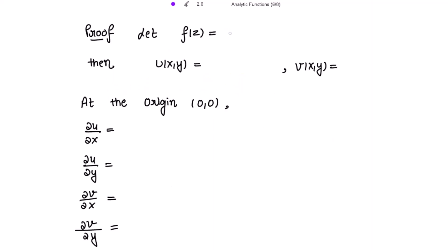Let f(z) = u + iv. Because f(z) = √|xy| as given, then u(x,y) and v(x,y) are functions of x and y both. So this u is u(x,y) and this v is v(x,y), depending upon x and y both.